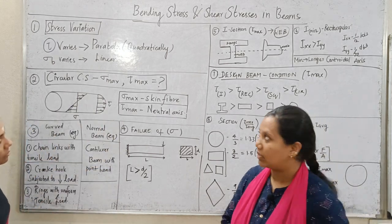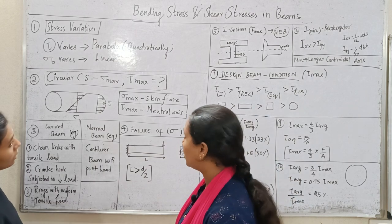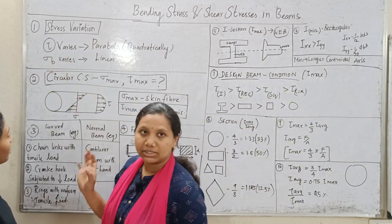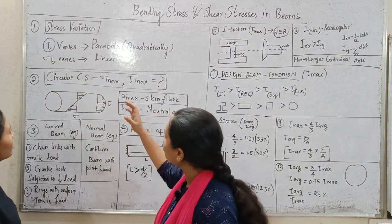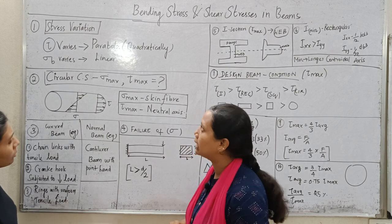First one, stress variation. First one is stress variation. Tau is shear stress, bending stress. Shear stress, when you vary the stress, you are going to see parabola. Parabolically, quadratically.